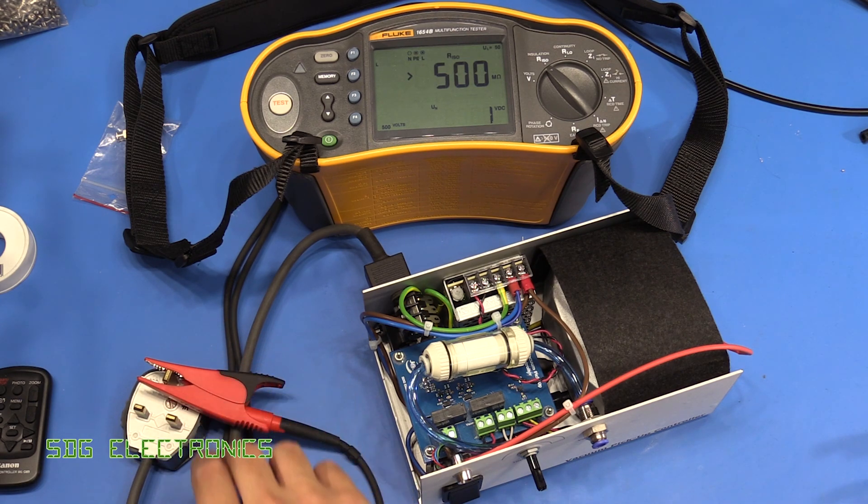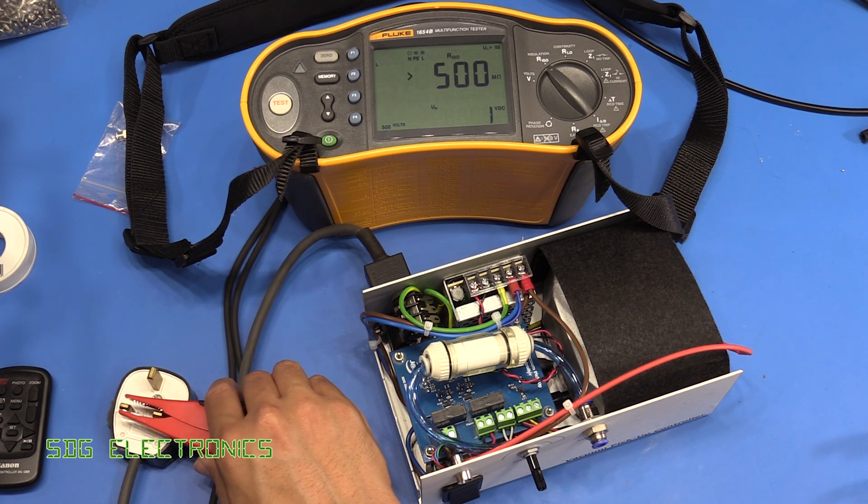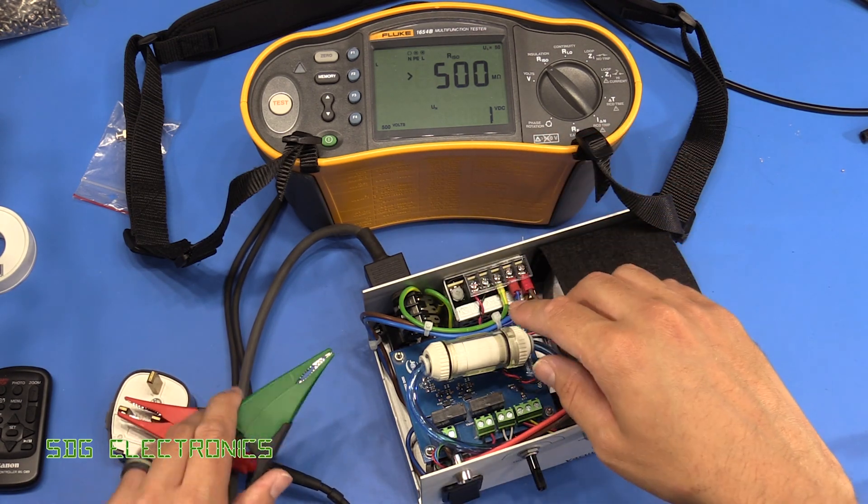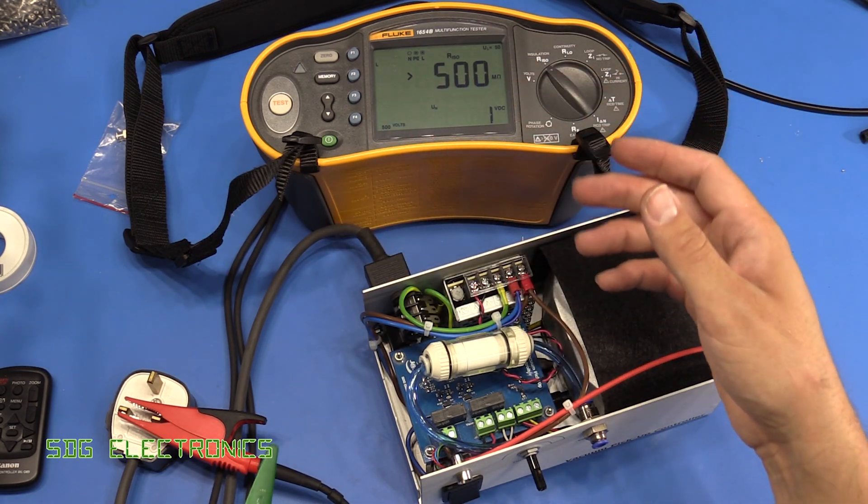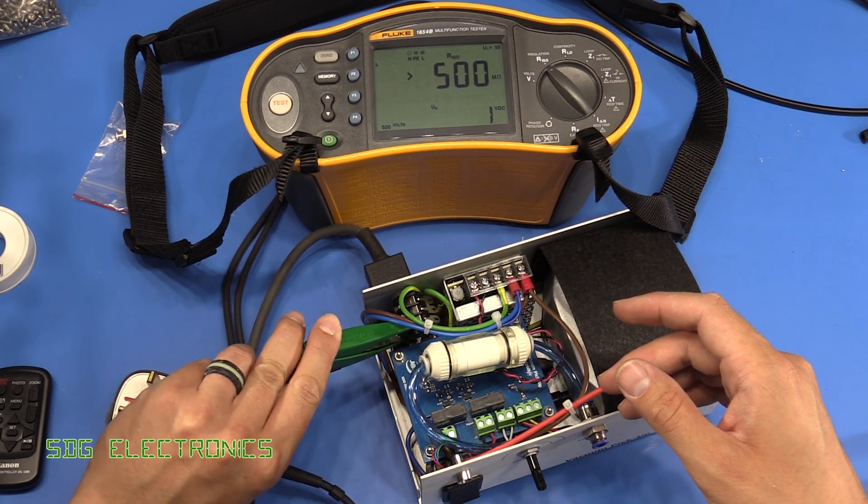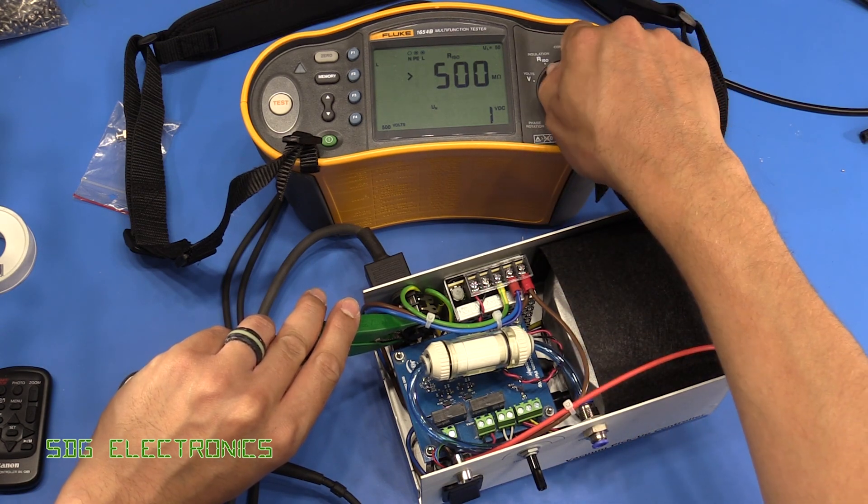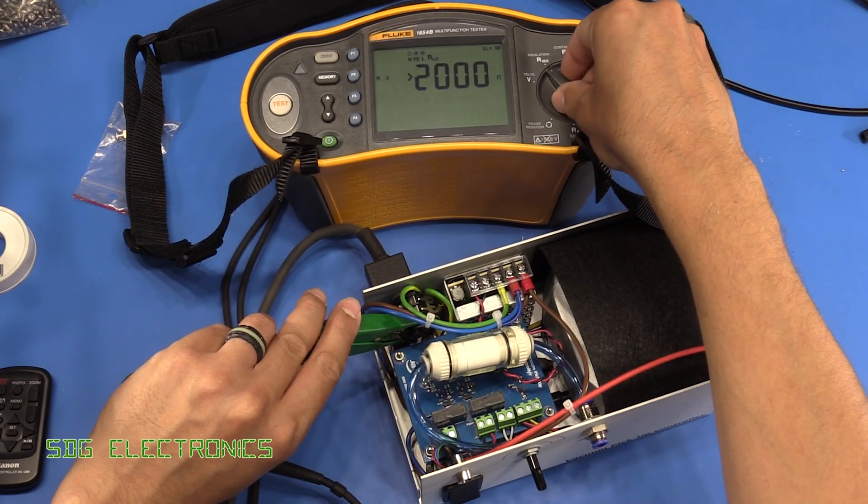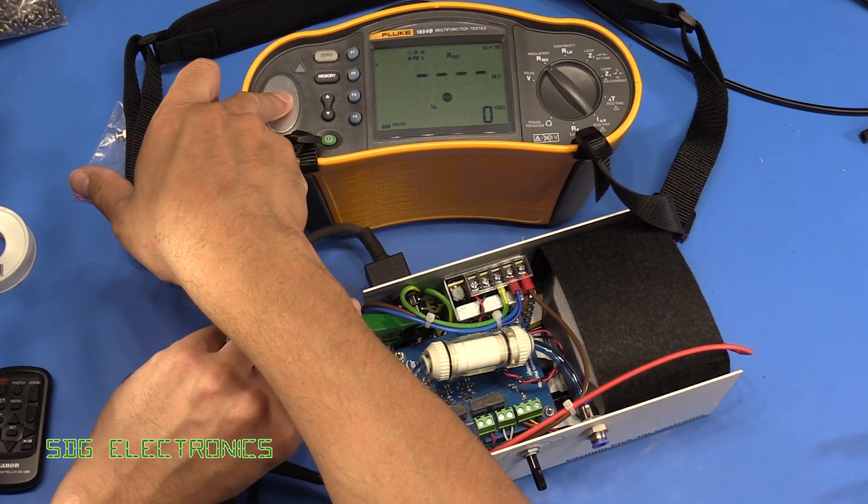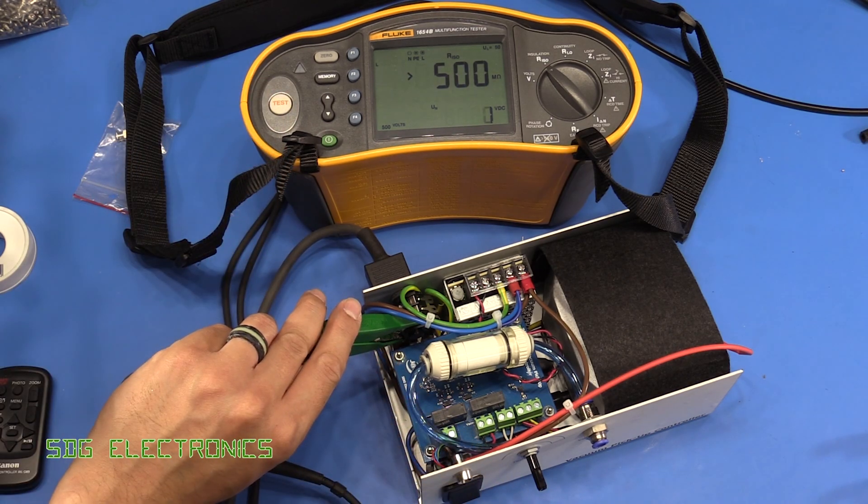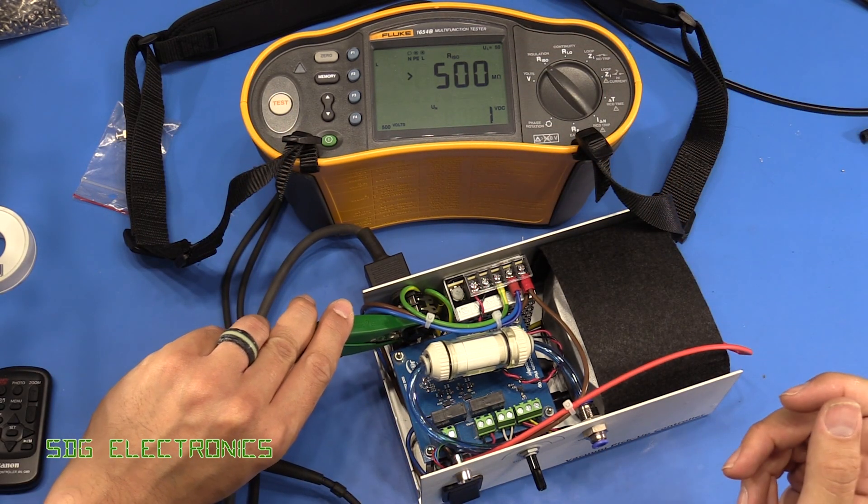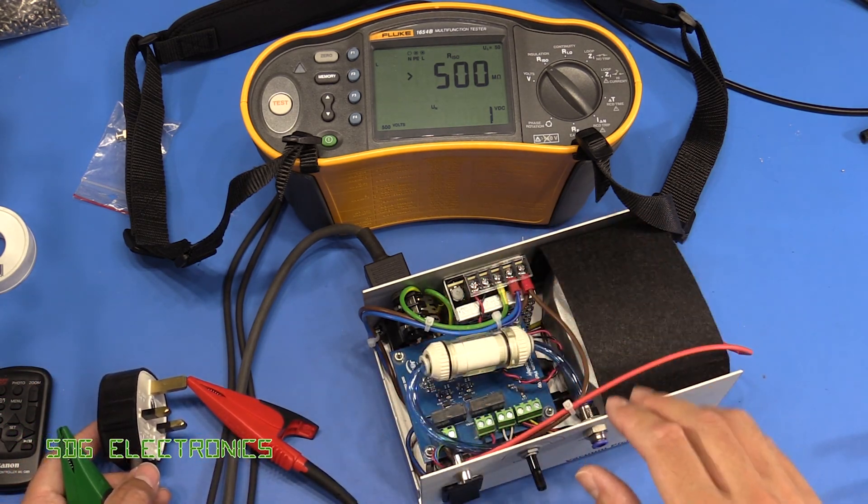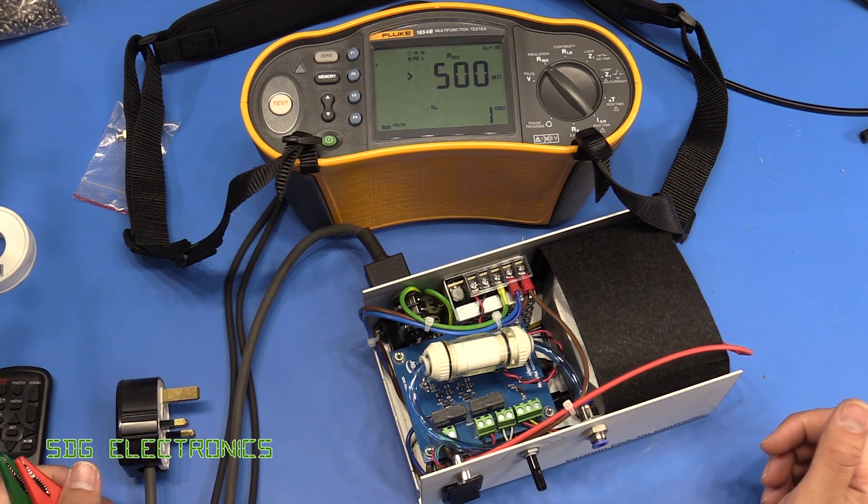One last test that we can do is do the same test, but test it between something on the extra low voltage side of the board just to make sure that when we plug in our foot pedal, we're not going to get a shock. So I'll try and clip this onto here. I'll set it to continuity first just in case it's a dead short. And no, nothing there. So we'll do an insulation test. And there we go. So greater than 500 mega ohms between the live and neutral pins and anything on the extra low voltage side. So we should be able to plug this in now.